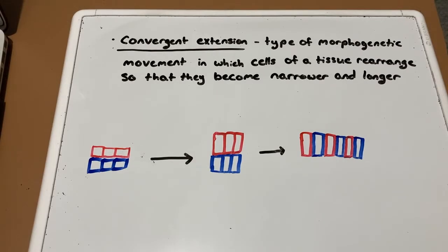In sea urchins and frogs, there's a cell crawling process known as convergent extension, which is a type of morphogenetic movement in which cells of a tissue rearrange so that they become narrower and longer, such as the diagram seen below.